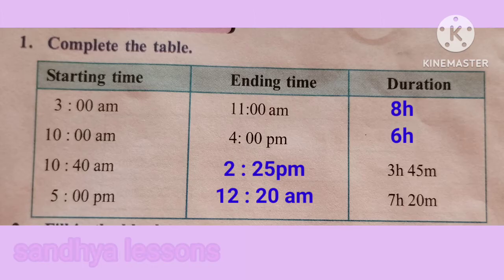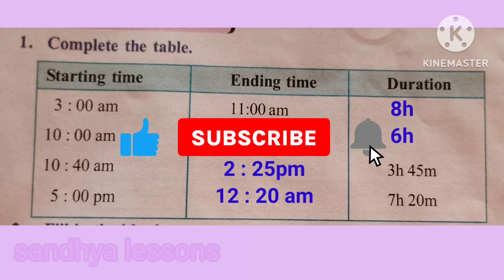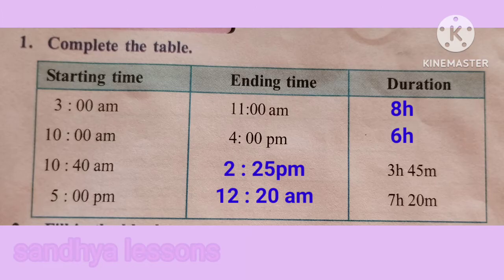Starting time is 10:40 AM and duration is 3 hours 45 minutes. To find the ending time, add the duration to the starting time, so ending time is 2:25 PM. Starting time is 5 PM, duration is 7 hours 20 minutes, so ending time is 12:20 AM.